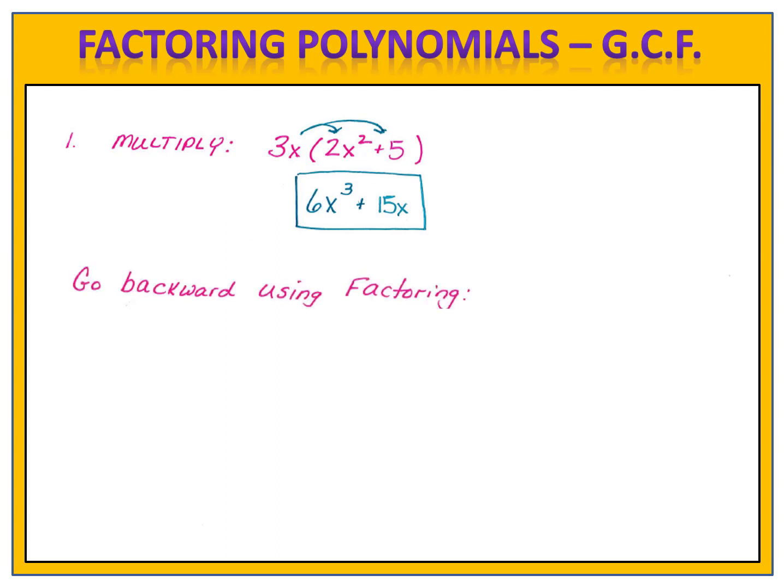Going backward is a process known as factoring. There are many techniques that we can use to factor polynomials. In this lesson, we're going to use the method known as the greatest common factor. We begin with the result 6x to the third plus 15x, and we want to factor this to get 3x times 2x squared plus 5, as we began with at the start of this example.